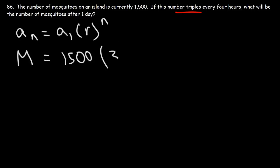Now what about n? We can't simply replace n with t because it doesn't triple every hour. Instead, it triples every four hours. So this is going to be t over four, because if you replace t with four, you get four over four, which is one, and thus you'll be multiplying 1,500 by three.